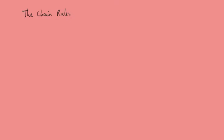We'll be using the chain rule a lot and adding onto it the product rule. The chain rule was used when we have some function — say y equals (3x minus 5) to the power 4.